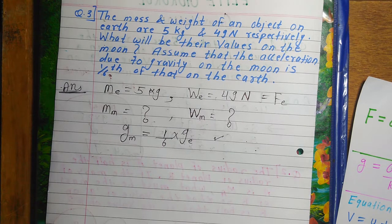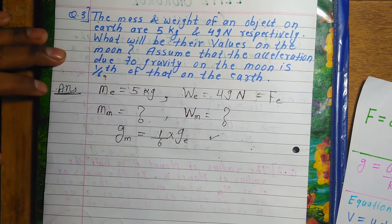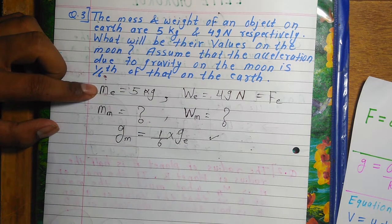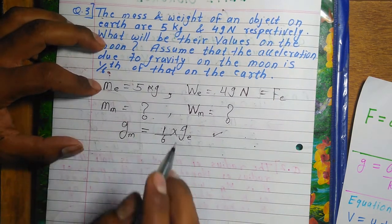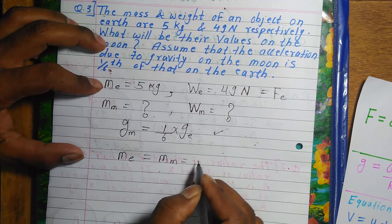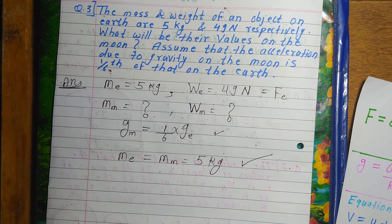As explained in Lecture 2, mass is the amount of matter in any object. Mass remains the same whether on Earth or Moon. So mass on Moon equals mass on Earth, which is 5 kg. That part is straightforward — the object's mass does not change.